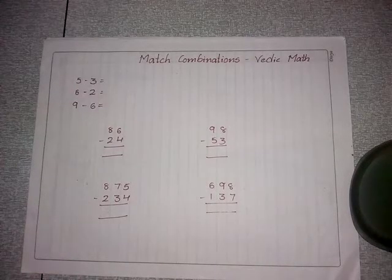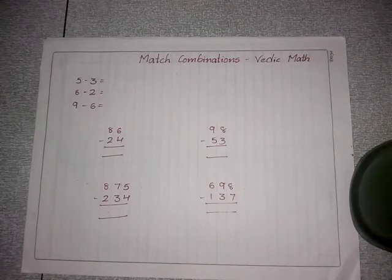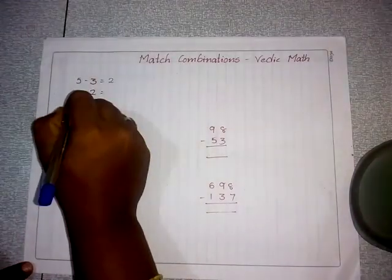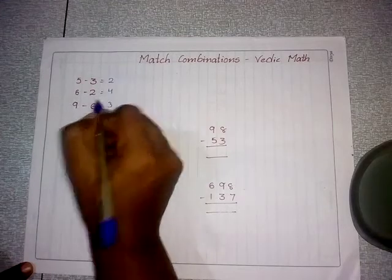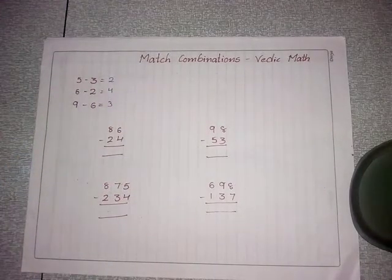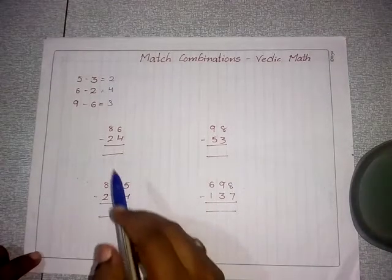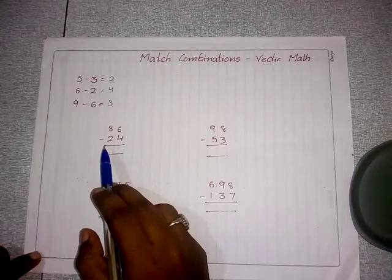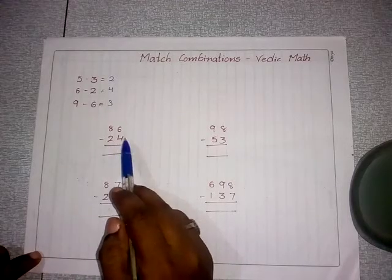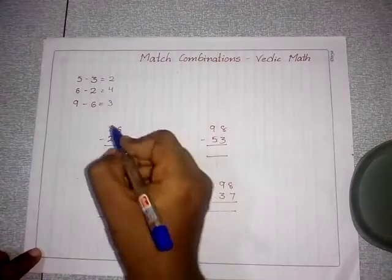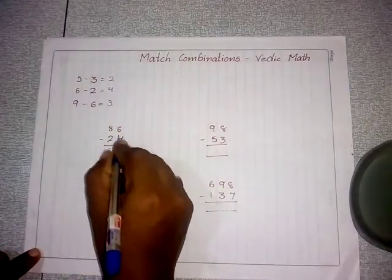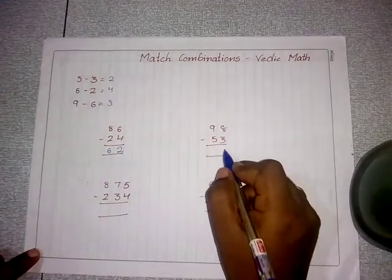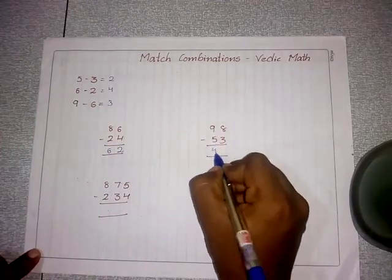Dealing with match combinations is very easy, as match subtractions are natural subtractions — for example, 5 minus 3 equals 2, 6 minus 2 equals 4, 9 minus 6 equals 3. For double-digit match combinations, we write the answer from left to right, not right to left. For example: 86 minus 24 — 8 minus 2 is 6, 6 minus 4 is 2, giving 62; 98 minus 35 — 9 minus 5 is 4, 8 minus 3 is 5, giving 45.